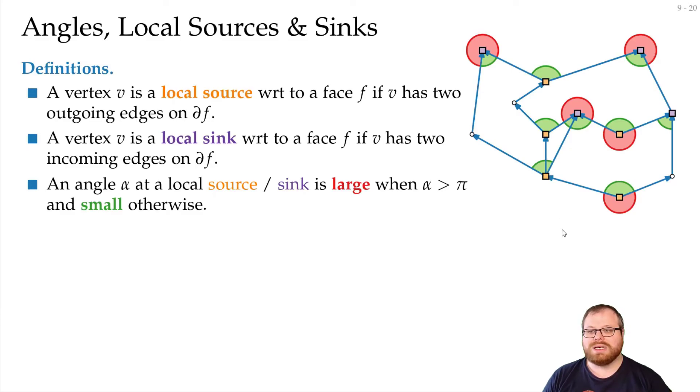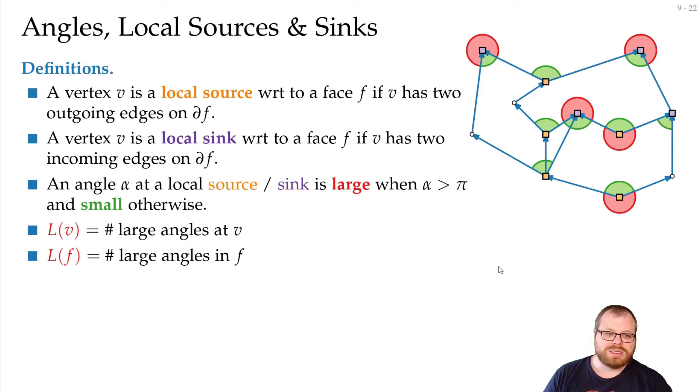Now you will see that all these vertices that have large angles are actually the global sources and global sinks. We now want to count for every vertex how many large angles do we have. And the same way we want to count for the faces how many large angles they have. And the same we want to do for the number of small angles.